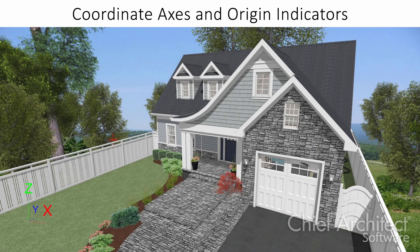In this video, we'll go over using the coordinate system indicators in the plan file and in camera views. These indicators will show the orientation of the coordinate system to help better understand where our drawing is in relation to the plan and other objects in the plan.